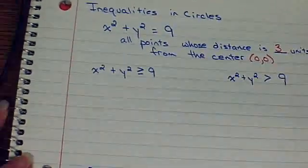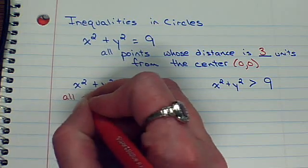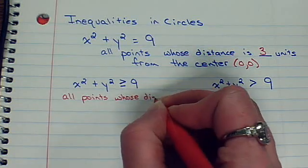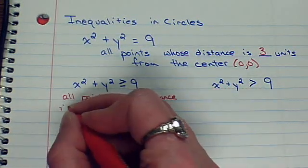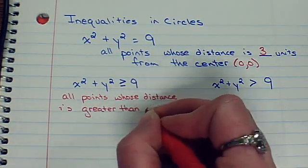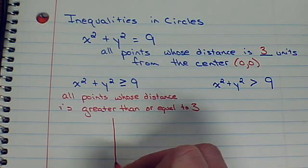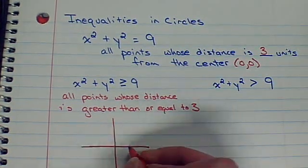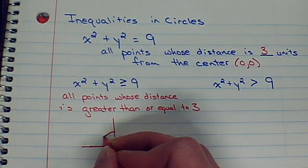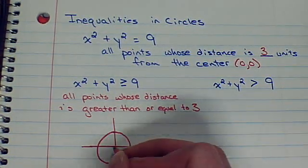Now what if we change that to greater than or equal to? That means we're talking about all the points whose distance is greater than or equal to 3 units. If we're equal to 3 units away, we get a nice solid circle because we're talking about every single point that is 3 units from the center.